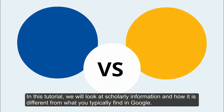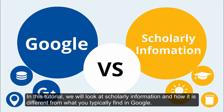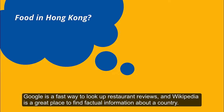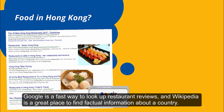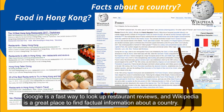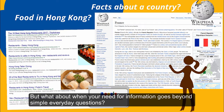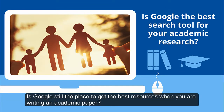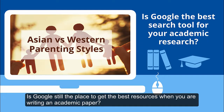In this tutorial we will look at scholarly information and how it is different from what you typically find in Google. Google is a fast way to look up restaurant reviews and Wikipedia is a great place to find actual information about a country. But what about when your need for information goes beyond simple everyday questions? Is Google still the place to get the best resources when you are writing an academic paper?